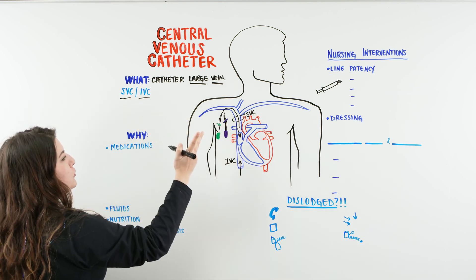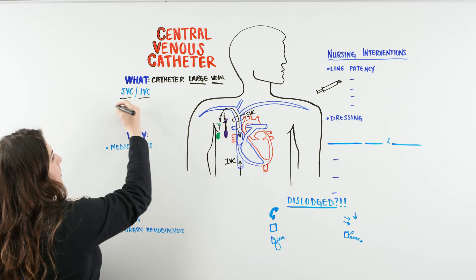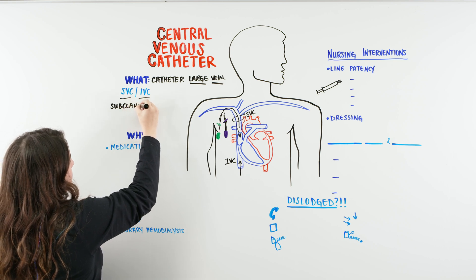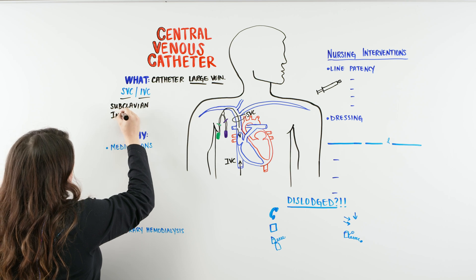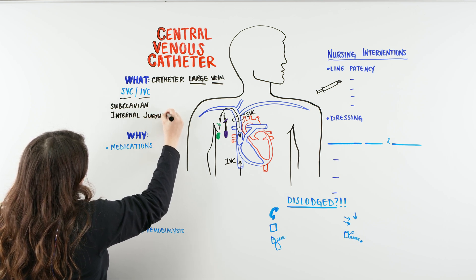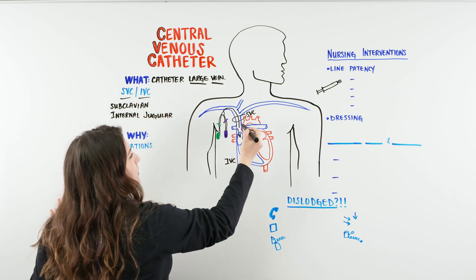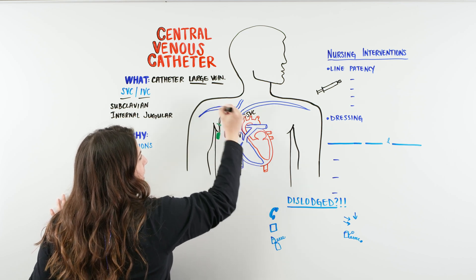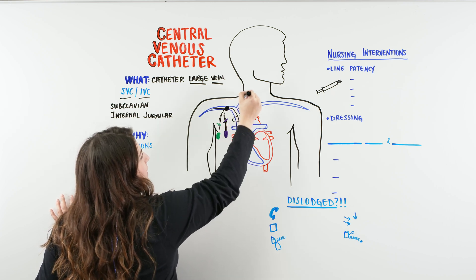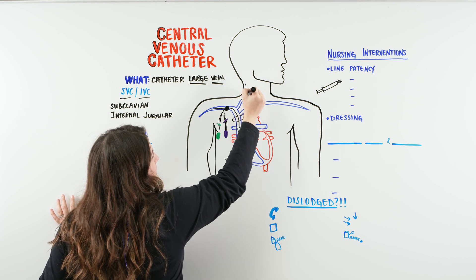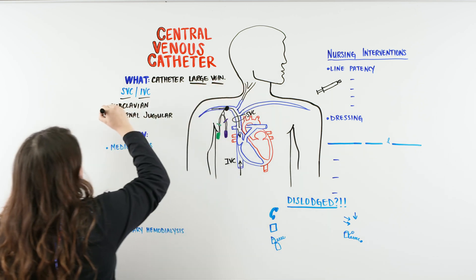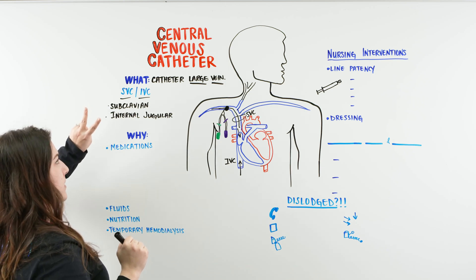So we have superior vena cava and we have two places that we can insert this, right? We have the subclavian or the internal jugular. Okay? So if you look here, right, we have the superior vena cava and that's from the subclavian which is right here and here's our point of insertion and then the catheter comes down.